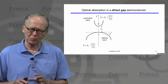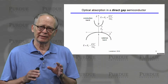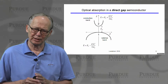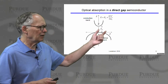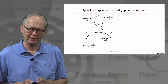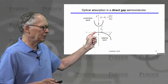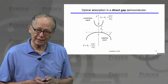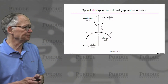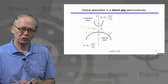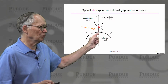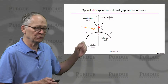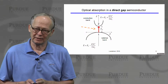We've talked about optical absorption — we need photons with energy high enough to break covalent bonds and create electron-hole pairs. Let's look at how this plays out in a direct gap semiconductor. In a direct gap semiconductor, the maximum energy in the valence band is at momentum zero, and the minimum energy in the conduction band is also at momentum zero. Shining light creates an electron-hole pair by moving an electron from a state in the valence band to a state in the conduction band.